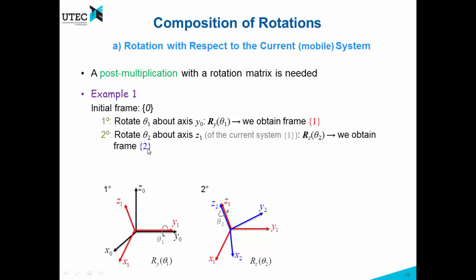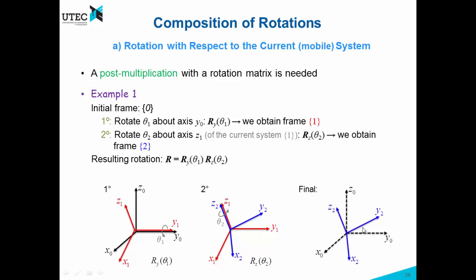We obtain frame 2. The resulting rotation is represented as follows: first we applied the rotation Ry, and then the rotation Rz, but this second rotation was with respect to the current axis, so it will post-multiply the first one. So the result is Ry followed by Rz post-multiplying it. Graphically, this gives the blue frame with respect to the black initial frame.